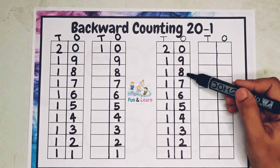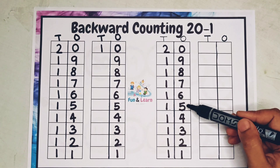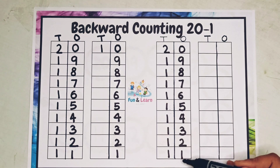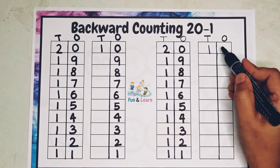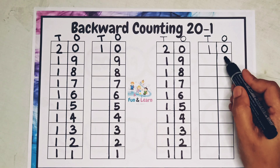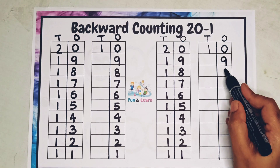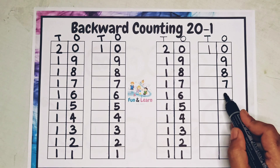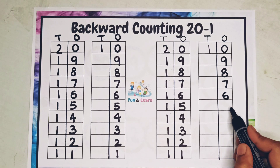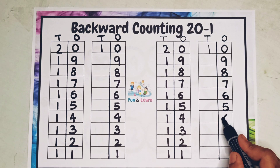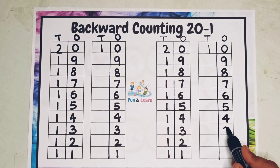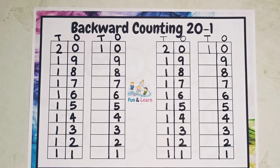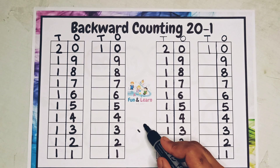We will write: 20, 19, 18, 17, 16, 15, 14, 13, 12, 11, then we go to 10, 9, 8, 7, 6, 5, 4, 3, 2, and 1. So this was your backward counting from 20 to 1.